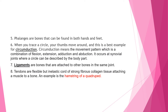Number six: when you trace a circle, your thumbs move around, and this is the best example of circumduction. Circumduction means the movement pattern which is a combination of flexion, extension, adduction, and abduction. It occurs at synovial joints where a circle can be described by the body part. This term is mostly anatomy.